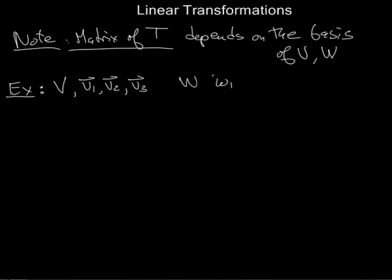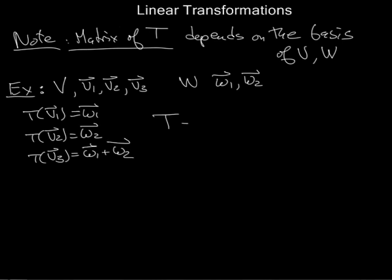Suppose I had a vector space V with a basis V1, V2, and V3, and W a two-dimensional vector space. And suppose that I told you T of V1 was W1, T of V2 is W2, and T of V3 was W1 plus W2.